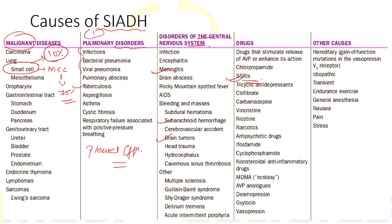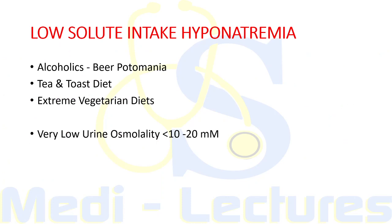The most common drugs responsible for SIADH are SSRIs — selective serotonin reuptake inhibitors. Other causes include hereditary gain-of-function mutations in the V2 receptor, endurance exercise, general anesthesia, and nausea.